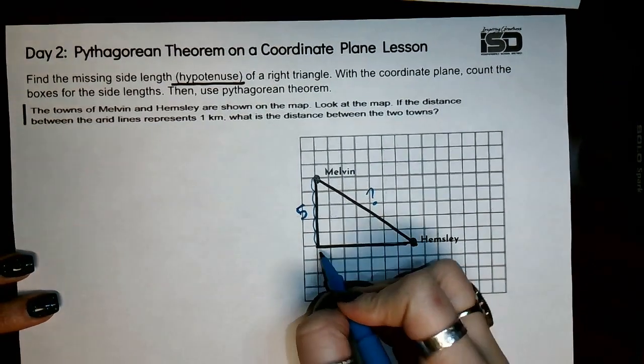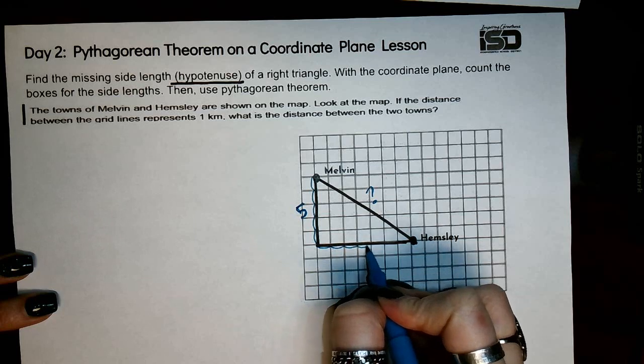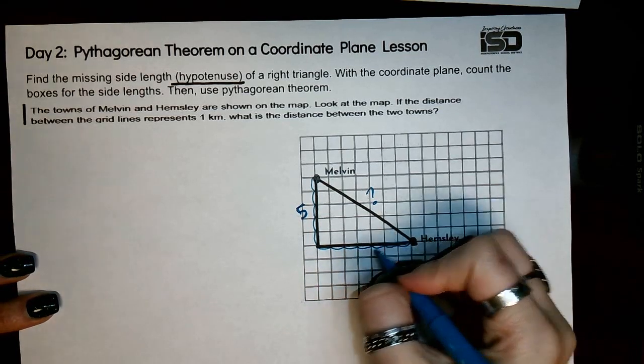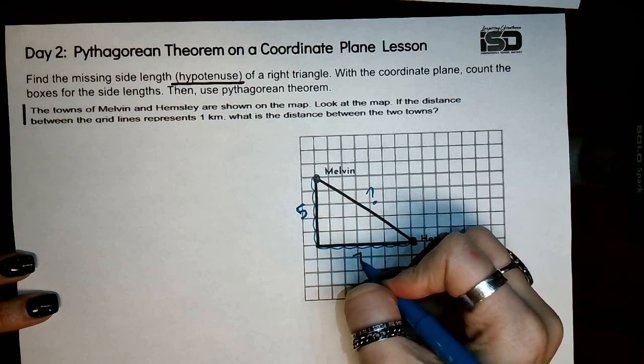Now this side length, one, two, three, four, five, six, seven. So this side length is seven units.